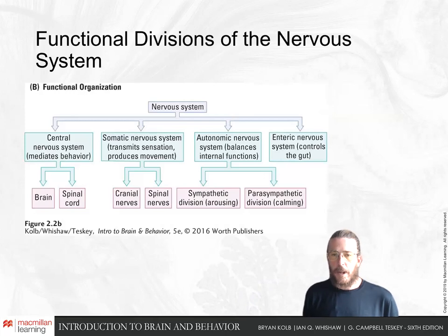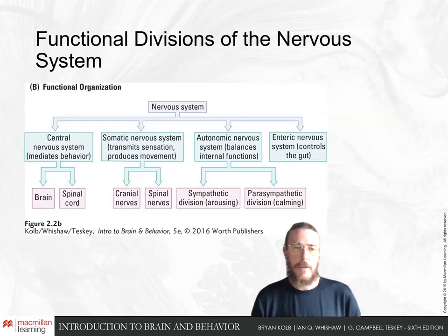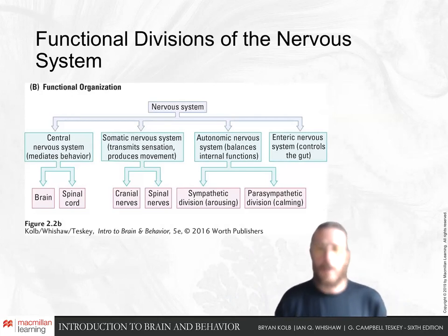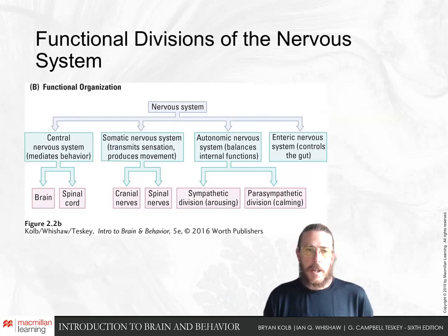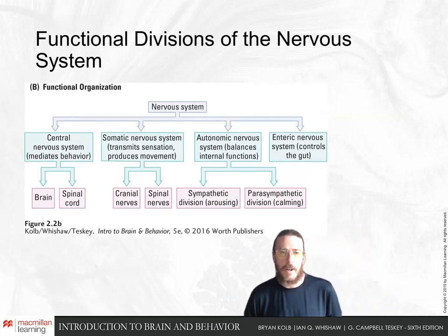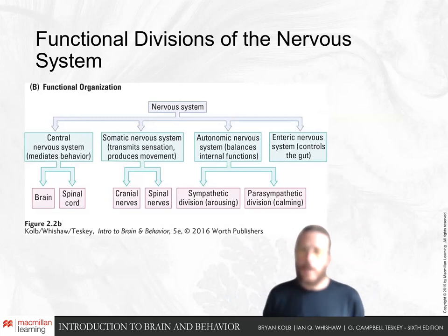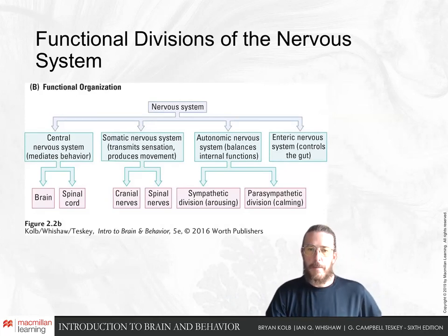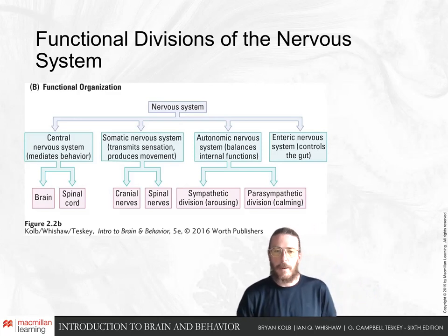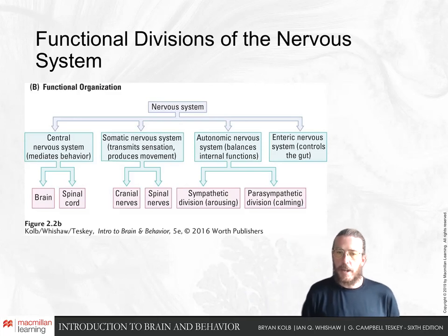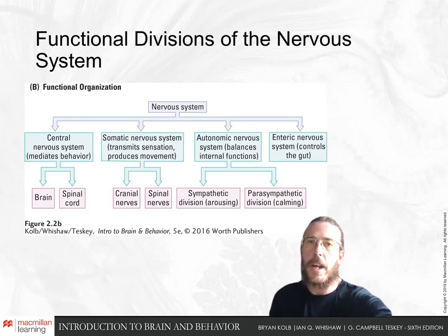We can think about this organization functionally as well. The nervous system is divided into the central nervous system, the somatic, autonomic, and enteric — which all comprise the peripheral nervous system. The somatic nervous system controls all our movements and transmits all our sensory information. The autonomic nervous system controls our internal organs and functions, further divided into the sympathetic and parasympathetic divisions. Finally, the enteric nervous system controls our gut and receives information about the state of our digestion.